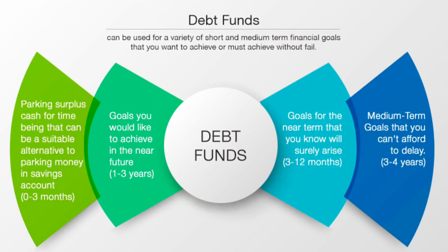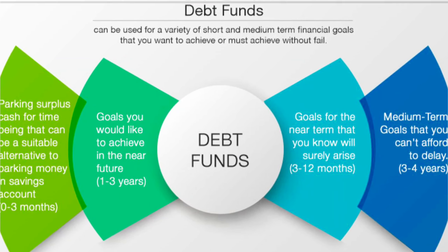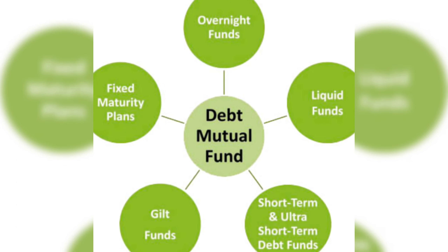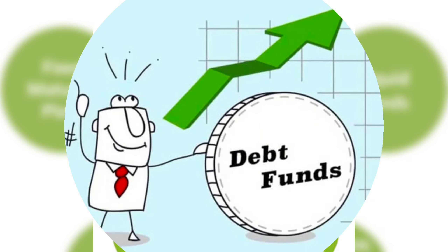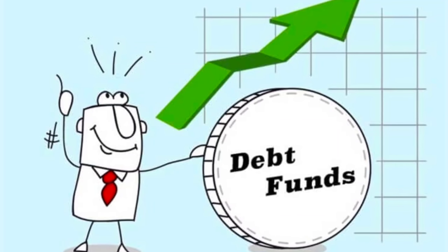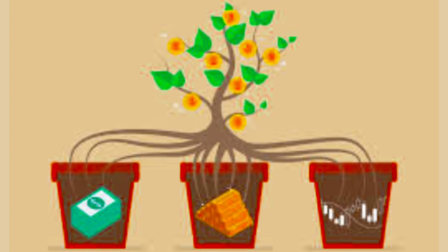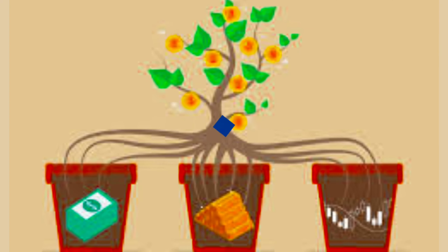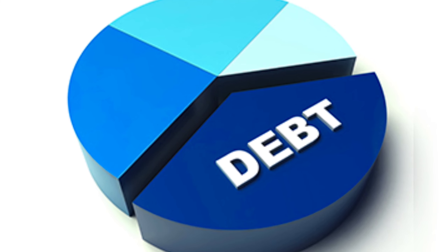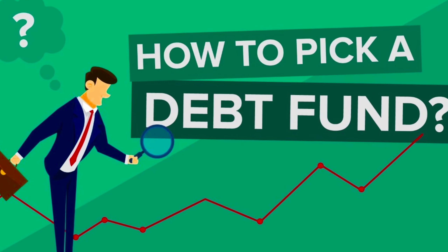Debt mutual funds invest in fixed income securities such as corporate bonds, treasury bills, commercial papers, and government securities. These instruments have a predetermined maturity date and interest rate. They are a preferred choice for passive investors with a low-risk appetite; however, movements in interest rates pose a risk to debt fund investors.